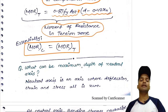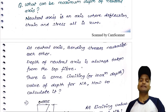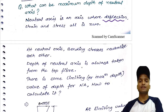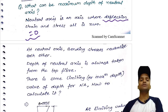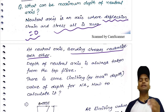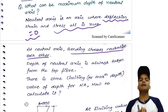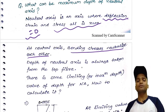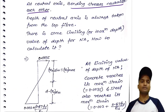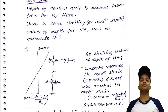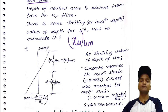The next question is: what is the maximum depth of neutral axis? By definition, the neutral axis is the axis where strain is zero — there is no deformation because tensile and compressive bending stresses neutralize each other there. The depth of neutral axis is always measured from the top fiber. This limiting value is represented by two equivalent notations: xu,limiting or xu,maximum — both are the same.